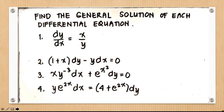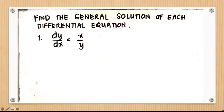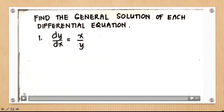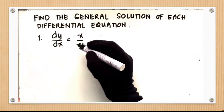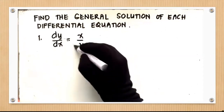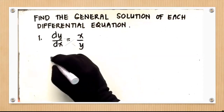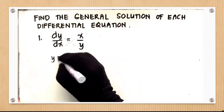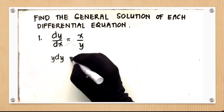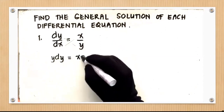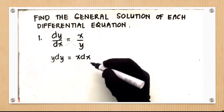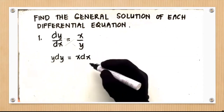Let's solve the first example: dy over dx equals x over y. Cross-multiplying to separate the variables: y dy equals x dx on the right-hand side. Simple as that — the variables are separated.